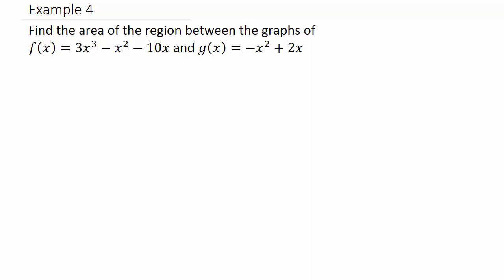Alright, so the fourth example on finding the area between curves. It says find the area of the region between the graphs of f of x equals 3x cubed minus x squared minus 10x and g of x equals negative x squared plus 2x.